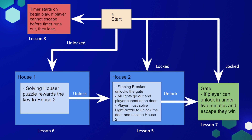So in this diagram, I have a start point. And upon start, we're also going to have a timer that starts to tick down. This timer is going to be the lose condition of our game. So if the player cannot escape before the timer runs out, they will lose. And this is going to be defined in lesson eight of this week.